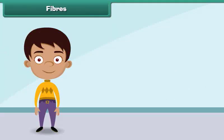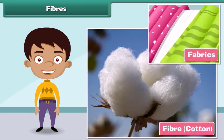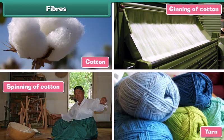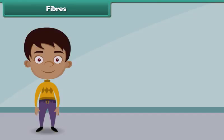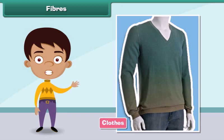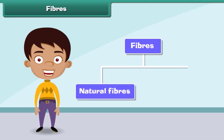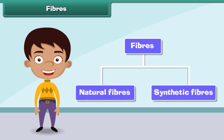Fiber is the raw material used in manufacturing clothes. Fibers are transformed into clothes through a series of steps. First, raw fibers are twisted together to form long strands of threads known as yarns. The yarns are then woven and knitted to form fabrics, which are finally used to make clothes. Fibers are of two types: natural fibers and synthetic fibers.